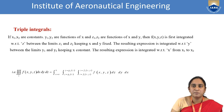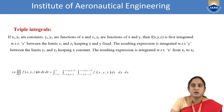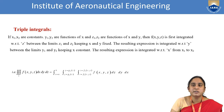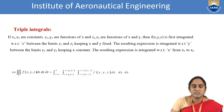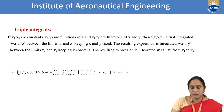Once again, to repeat: first integrate with respect to z, because the z limits are in terms of x and y. After that, integrate with respect to y, because the y limits are in terms of x. After that, integrate with respect to x, because the x limits are always constants. This is the procedure for finding the triple integral.